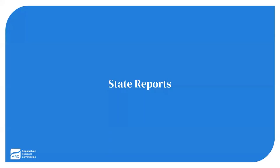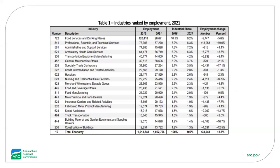In the 13 state-specific reports, data for the Appalachian portions of states are presented in a number of tables, along with short descriptions of each. An example of this is Table 1 here for Appalachian Alabama, which displays the 20 industries with the largest employment levels in 2021, along with data from 2016 as well. Also shown are the industrial shares for each year, which are simply the percentage of total employment in any given industry.